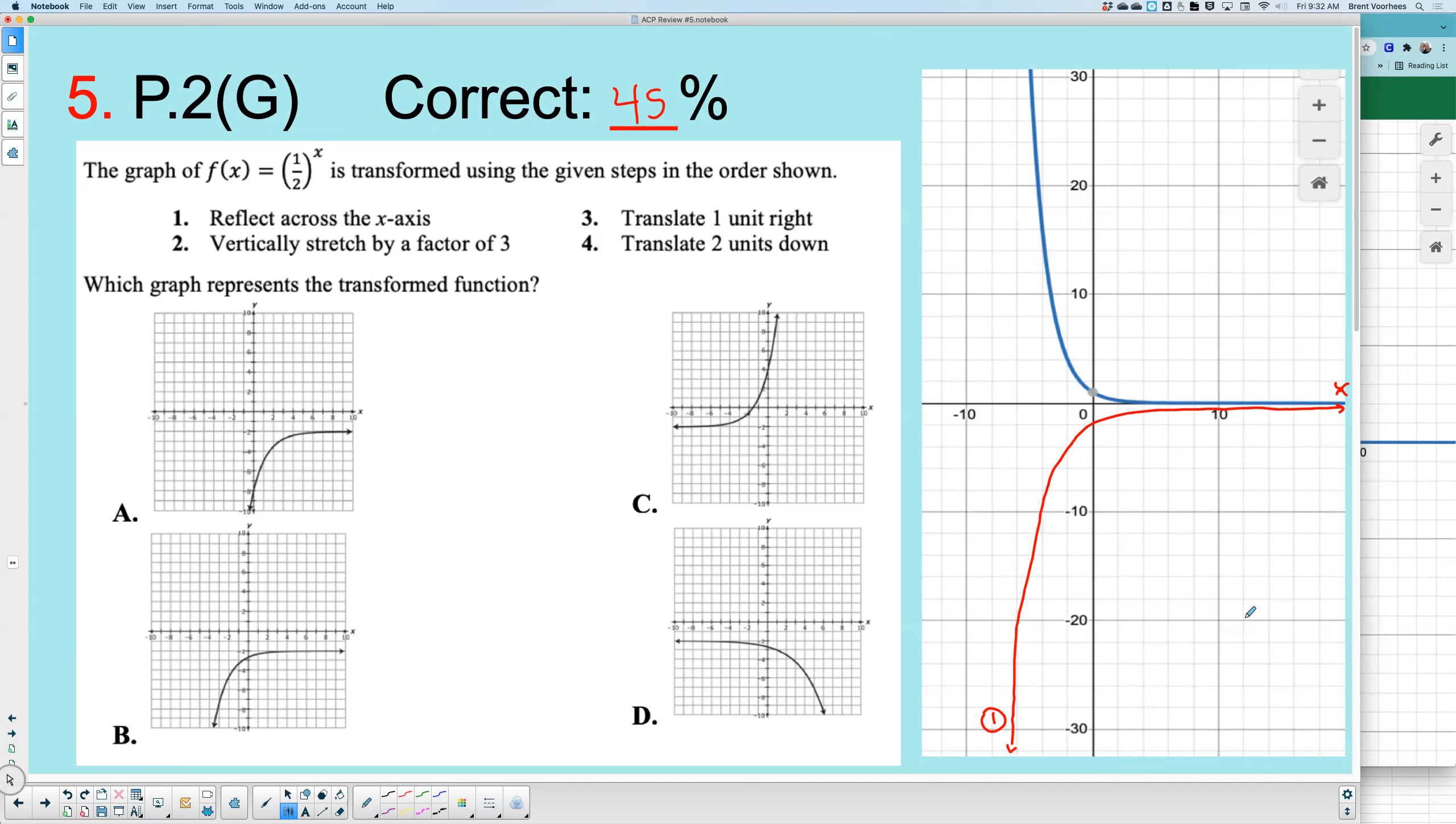Secondly, a vertical stretch by a factor of three. If you think in terms of algebra, this means all, vertical is x's or y's? Y's. This means all y values get stretched by a factor of three. Factor means multiply. It can also mean divide, but when it's a stretch, it's a multiply. All y's get multiplied by three. So let's come over here. Think in terms of the y-axis. Only the y-axis now. This is the y-axis.